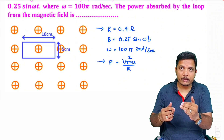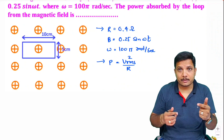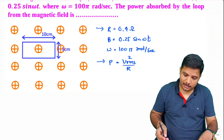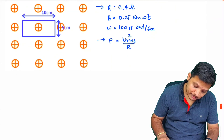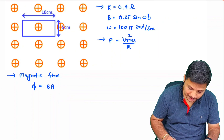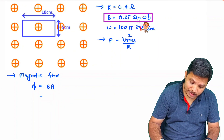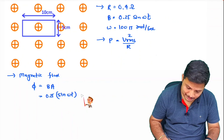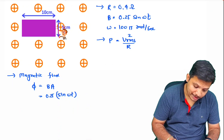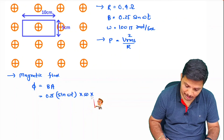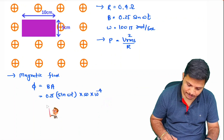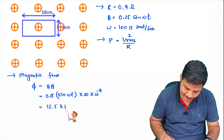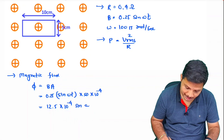Induced EMF is minus dφ/dt, where φ is magnetic flux. Magnetic flux is magnetic field multiplied by cross-sectional area. So let us find the magnetic flux first. Magnetic field is 0.25 sin(ωt) and area is 10 centimeter by 5 centimeter, that is 50 centimeter squared, which in meter squared is 50 × 10⁻⁴. So this flux will be 12.5 × 10⁻⁴ sin(ωt).